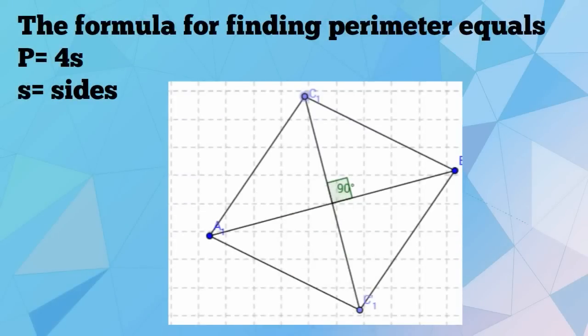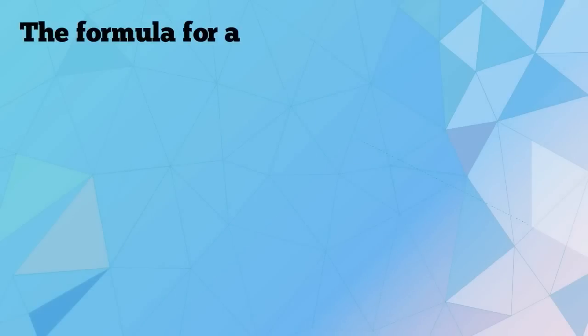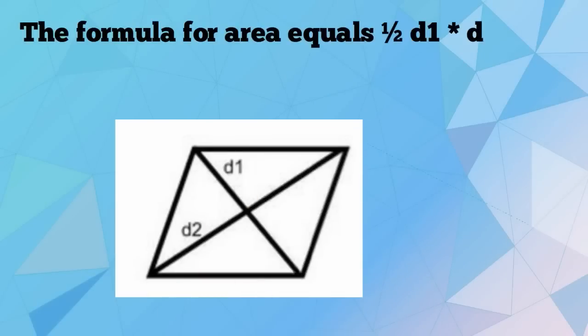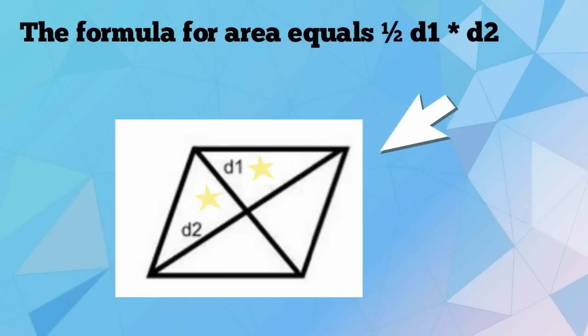The formula for finding the perimeter of a rhombus equals P = 4s, where s equals the side length. The formula for area equals one half times diameter 1 times diameter 2.